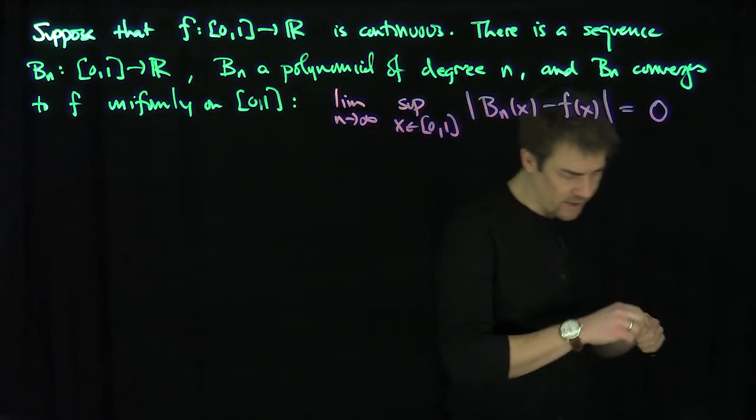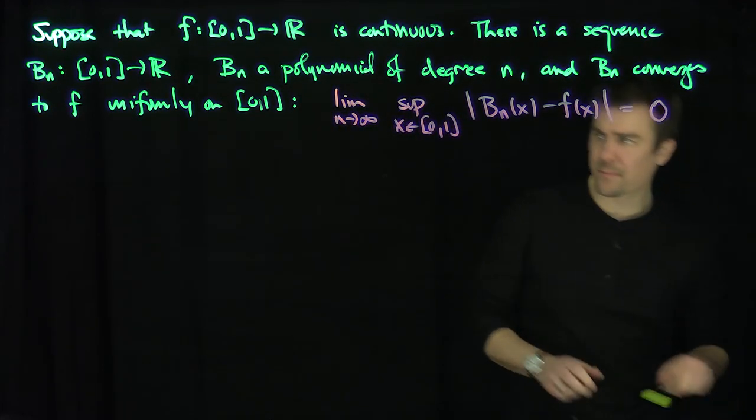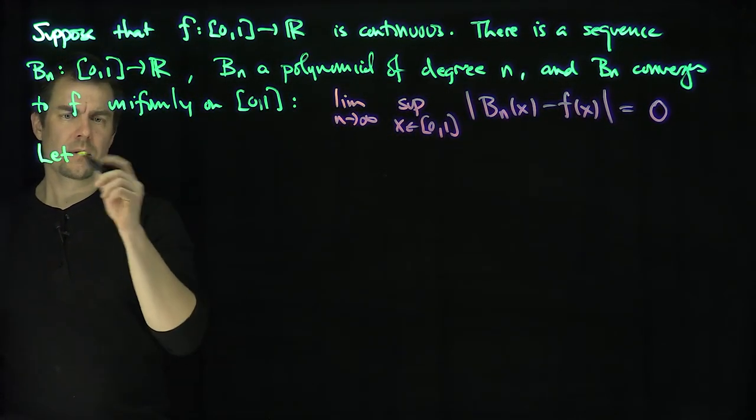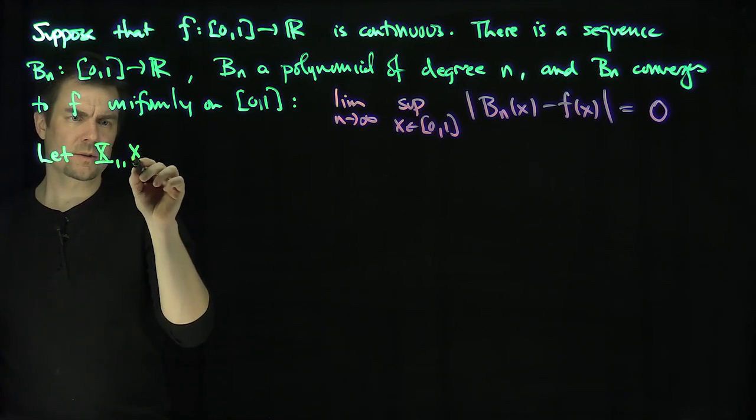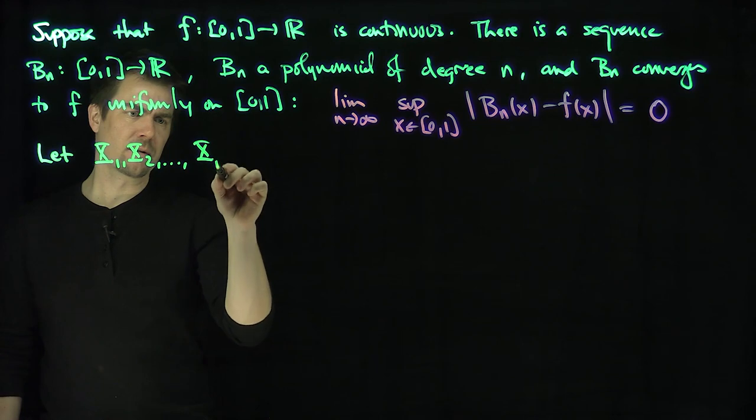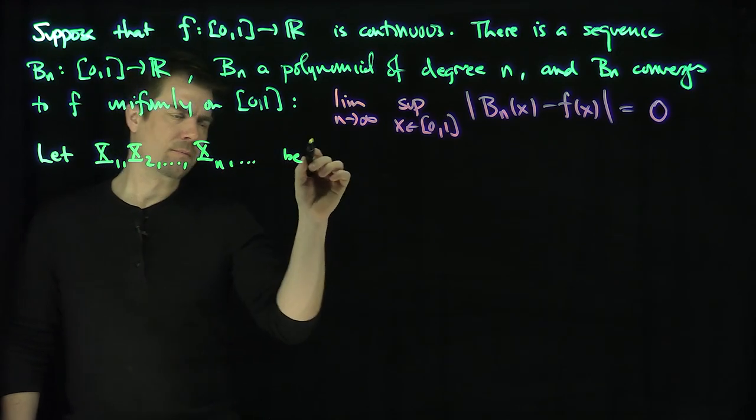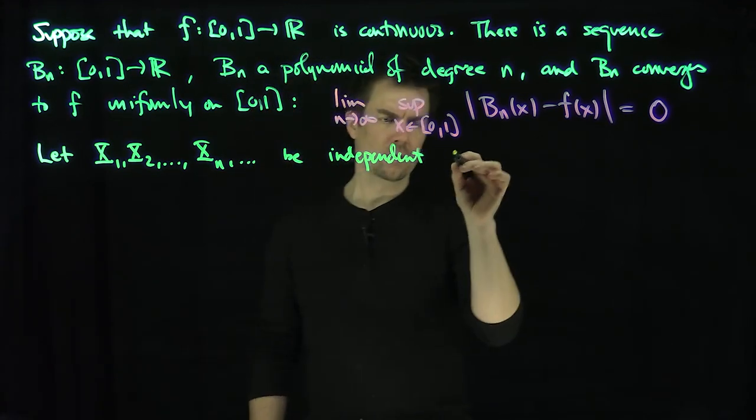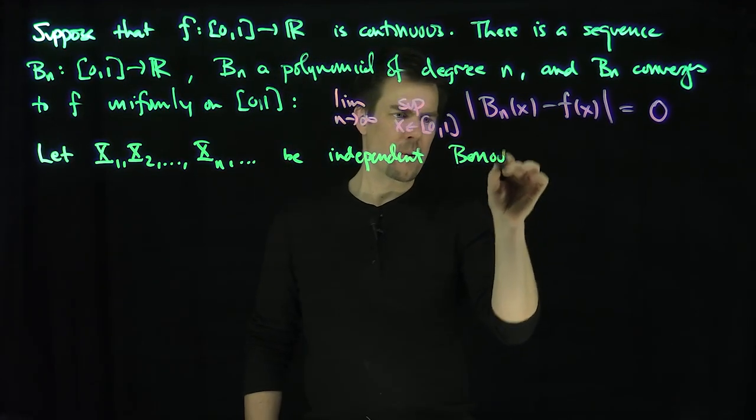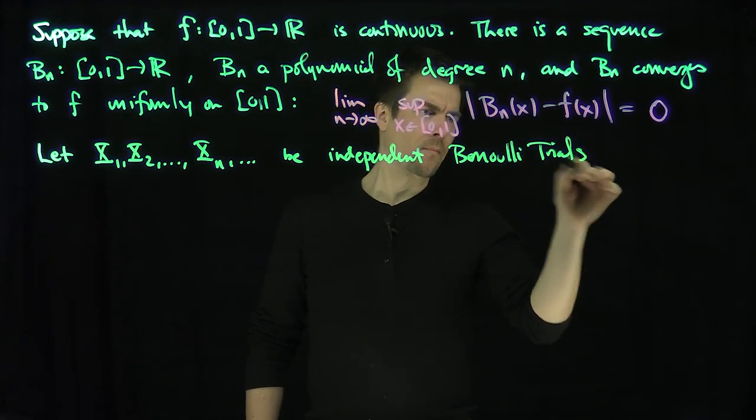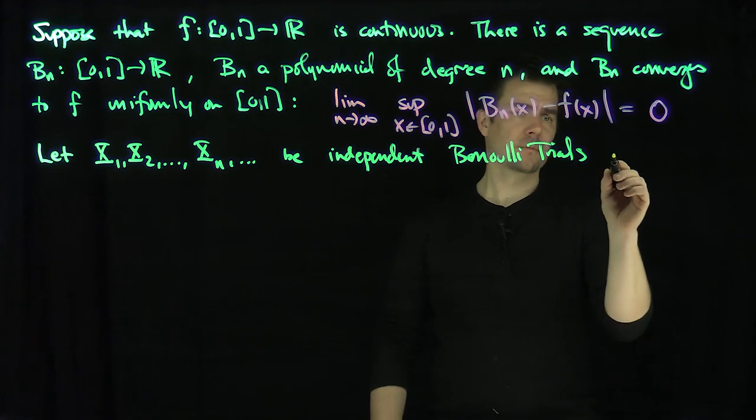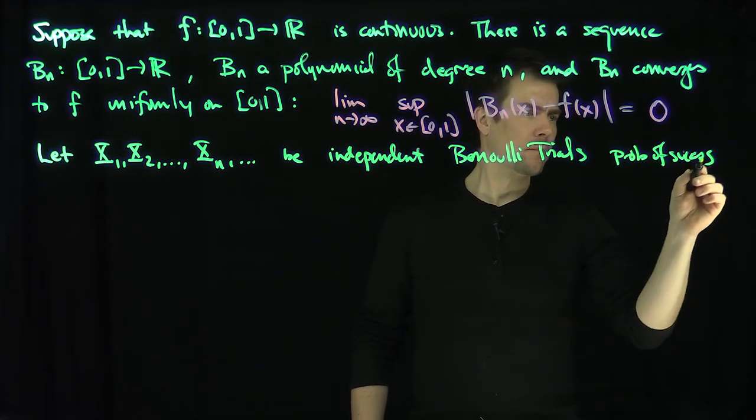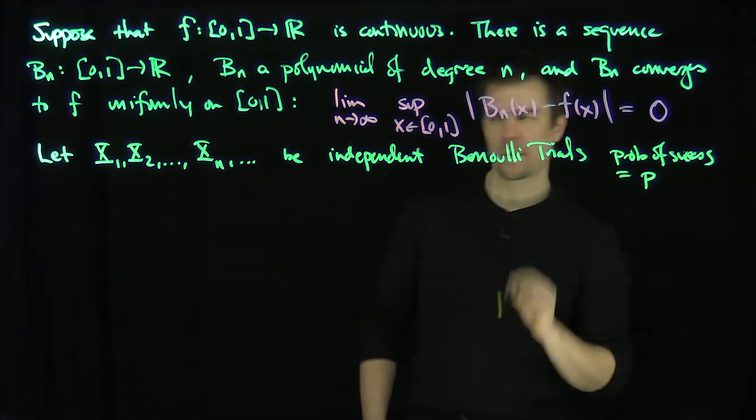The proof of this follows from a classic idea in probability theory. I'm going to let x1, x2, ..., xn be iid, be independent Bernoulli trials, with the probability of success being p.